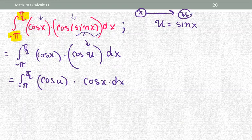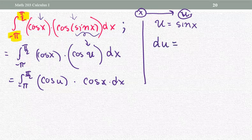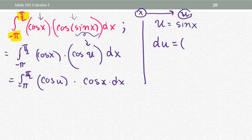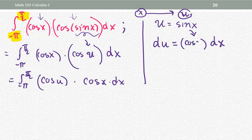On the side: since u equals sine x, the differential du equals the derivative times dx. The derivative of sine is cosine, so du equals cosine x dx. It's very convenient — we can see cosine x dx appearing exactly as the leftover expression in the integral. Therefore that expression is replaced with du.